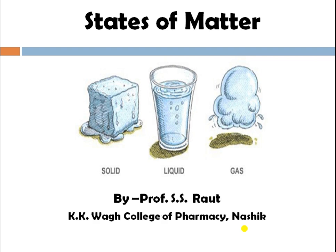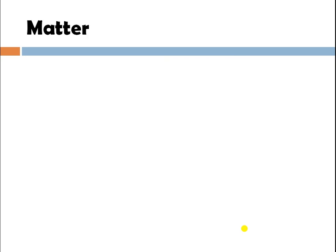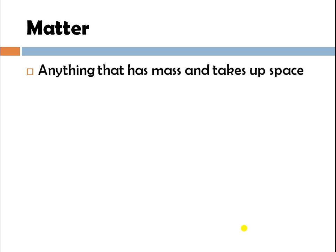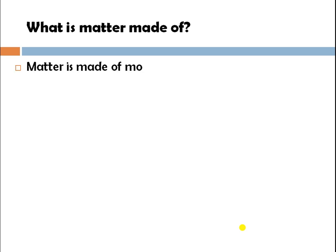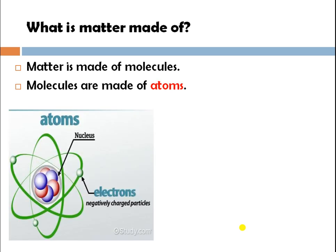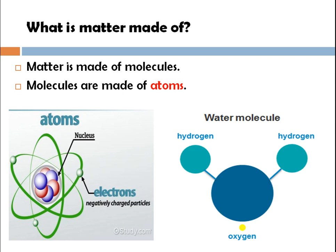Before moving ahead towards these phases, we will see some basic things regarding matter. What exactly is matter? Anything that has mass and takes up space is known as matter. Now this matter is classified into four subclasses: solid, liquid, gaseous, and plasma. Matter is made of molecules, and molecules are made of atoms.